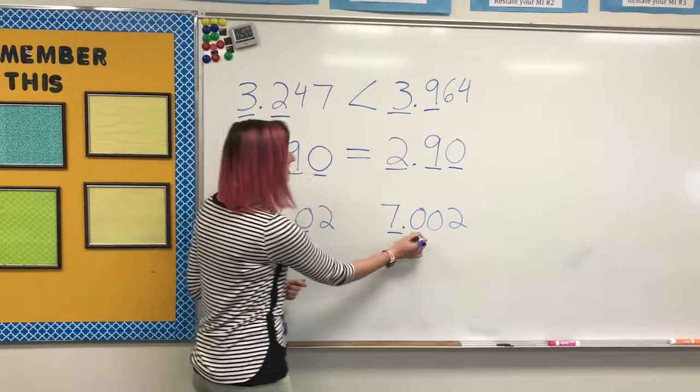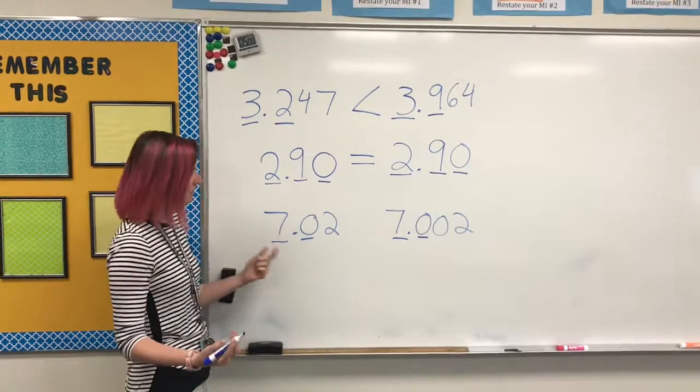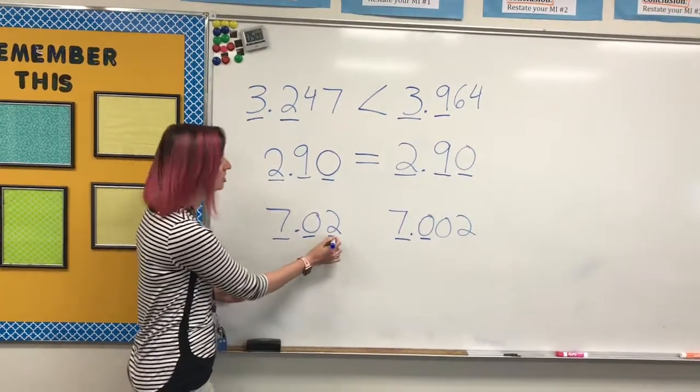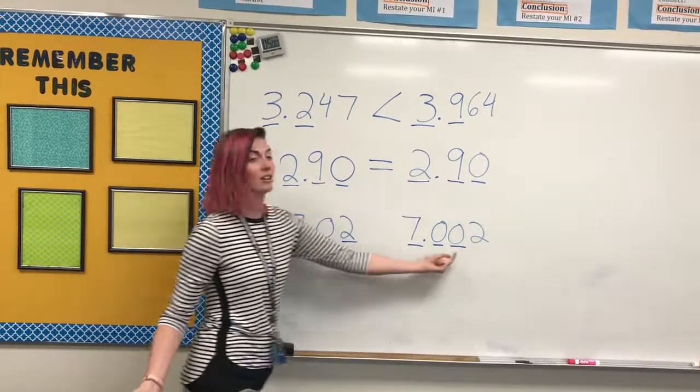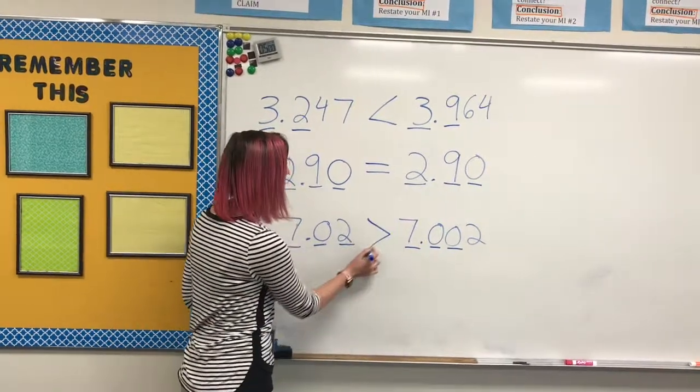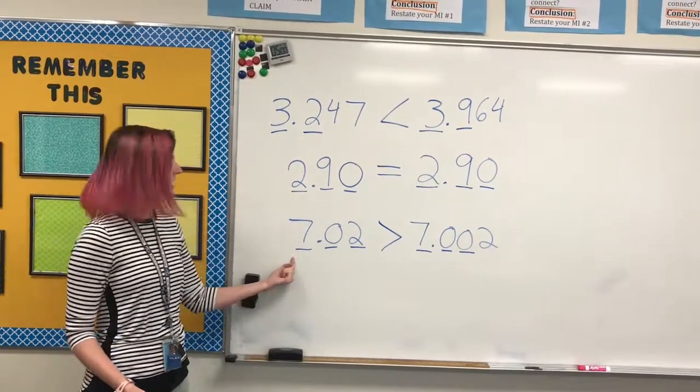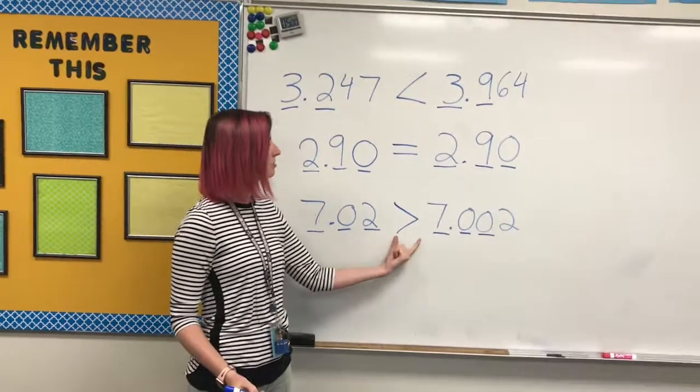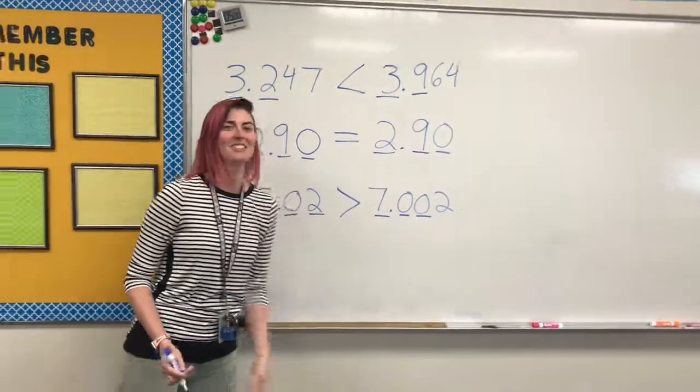Moving to the next place value of the hundredths, 2 and 0. 2 is greater than 0, so we mark our inequality. And our answer becomes 7 and 2 hundredths is greater than 7 and 2 thousandths.